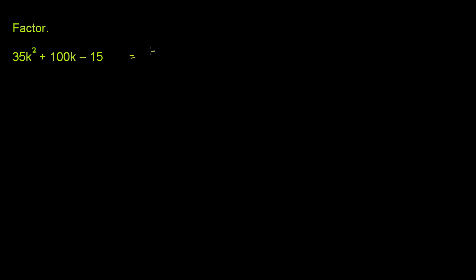So this is equal to 5 times 35k squared divided by 5 is 7k squared. 100k divided by 5 is 20k. And then negative 15 divided by 5 is negative 3.